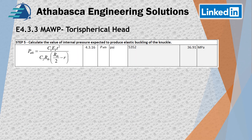Now we're getting some actual useful information. We needed C1 and C2 to put our values into this step. Here's where we use values like the modulus of elasticity. We calculated R_th earlier — this is step 4.3.6 — and then we calculate the pressure to buckle the knuckle, which is really, really high. It's amazingly strong, and this buckling calculation is only available in Division 2.